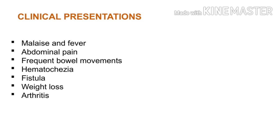This is the clinical presentation. Malaise, fever, abdominal pain, frequent bowel movements, fistula, weight loss, arthritis — this is the overall clinical presentation. If you look at the two conditions, there is a similarity, and the stricture is where you can differentiate.